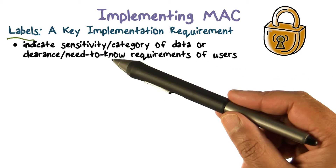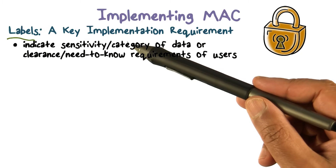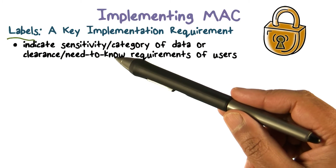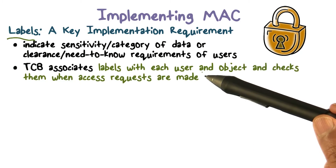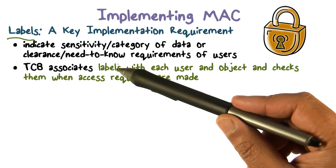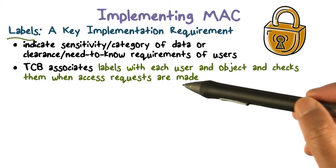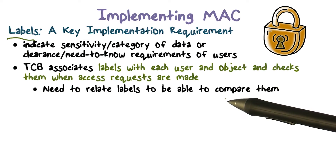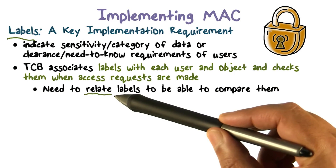That's useful in answering the question: who needs to know or needs to have access? If you're in the payroll department, of course, you need access to payroll information. Labels with documents, data files, or users capture something about the information contained in those documents and the users who need to access them. These labels are actually going to get manipulated each time access to an object or document is requested. The TCB is going to use these labels associated with the user and the object any time a request is made.